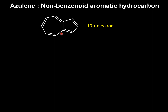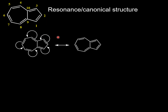Let us draw the different resonance or canonical forms of azulene. If we delocalize the pi electrons in azulene, we will end up with another resonance structure. Both structures are uncharged.